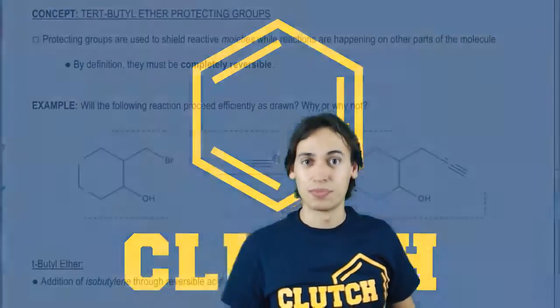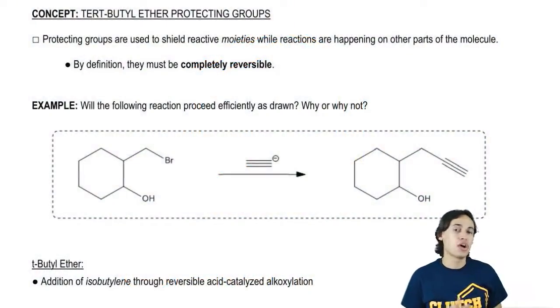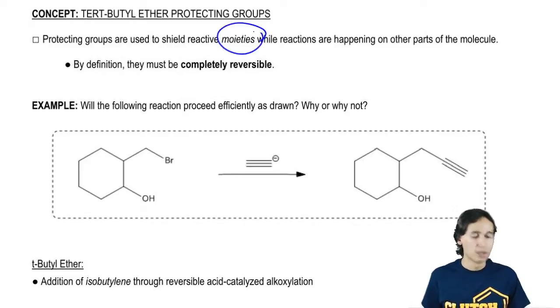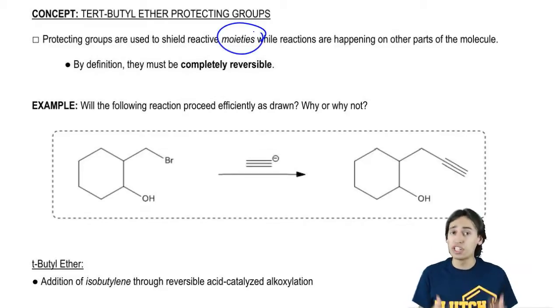Hey, guys. Now let's talk about protecting groups. Protecting groups are reactions that are used to shield certain types of functional groups. In this case, I'm using the word moieties. Moieties just means some kind of reactive region of the molecule from a reaction that's going to happen on another part of the molecule.